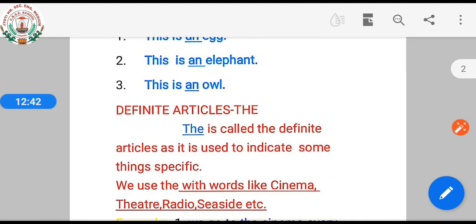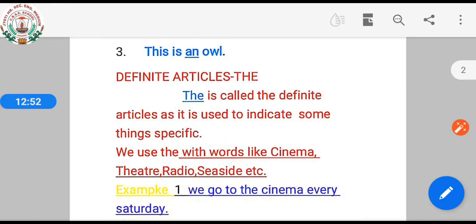Definite article 'the'. 'The' is called the definite article as it is used to indicate something specific. We use 'the' with words like cinema, theater, radio, seaside, etc.